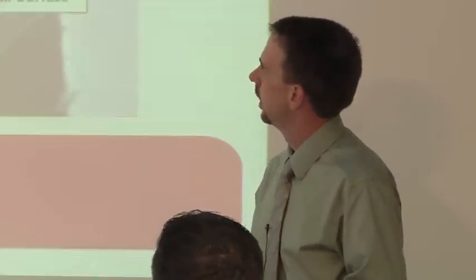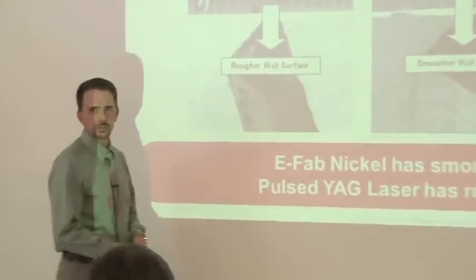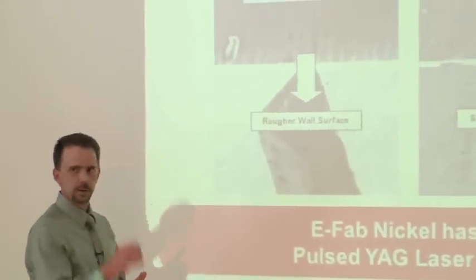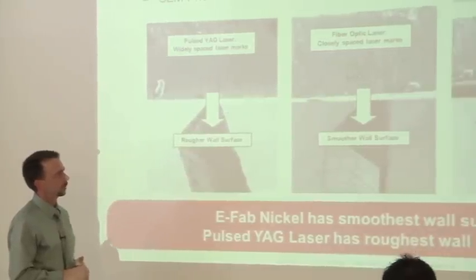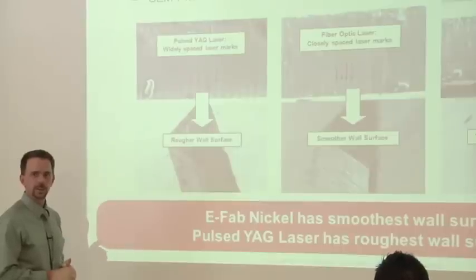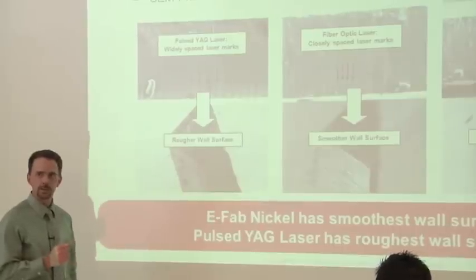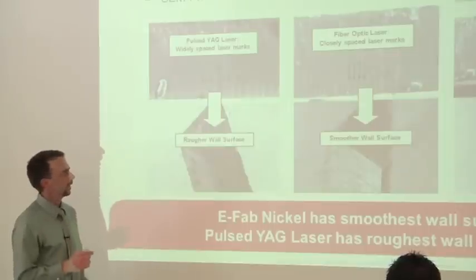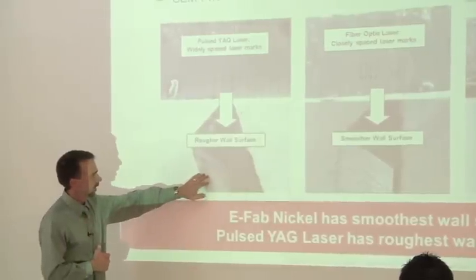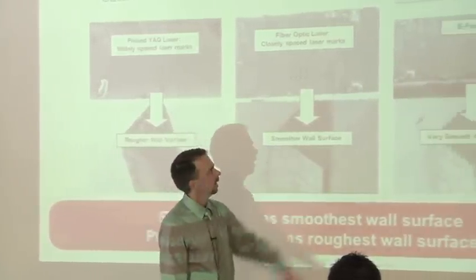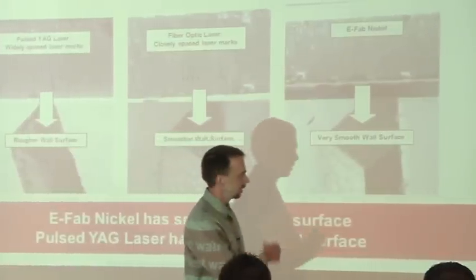Now we'll get into the aperture cutting methods. We looked at the pulse YAG laser. You can see some pictures of that over on the far left. This is what I was talking about with that scalloping features - you can see those different lines in the cut edge of the stencil that demark the pulsing of the laser as it goes through the material. If you look at the same thing over here on the fiber optic laser, those spaces are much closer together. That's indicative of the smaller spot size on the fiber optic laser as well as the higher frequency pulsing as it goes through. It moves those scallops a little bit closer together. They have a little less height, gives you a smoother wall surface. You can see here a relatively rough wall. It gets smoother here. And then the EFAB nickel, which is not a cutting process, gives you a very smooth wall surface.